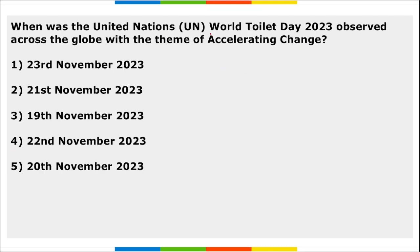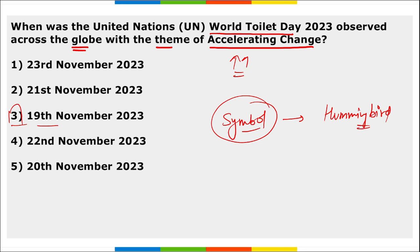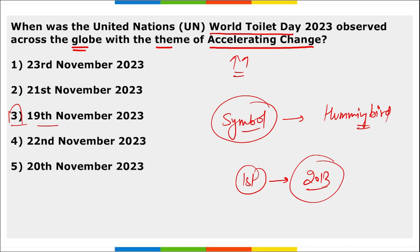Next: when was United Nations World Toilet Day observed across the globe with the theme 'Accelerating Change'? It is 19th November. The symbol for UN World Toilet Day is the hummingbird, because a toilet is small but mighty — just like a hummingbird. The first ever World Toilet Day was observed in the year 2013, on 19th November 2013.